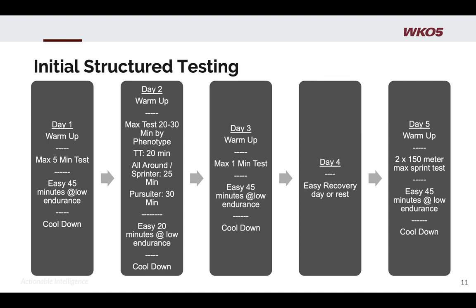Day one is a warm-up — each athlete needs to get warmed up at their own level — then an all-out maximum five-minute test, then roll around easy for 30 to 45 minutes to shake it off and cool down. Day two is your warm-up, then a max 20 to 30 minute test based on your phenotype. TT-ers need a 20-minute test; all-arounders and sprinters around 25; and pursuiters around 30 minutes. The reason the duration varies is that we want to burn off the anaerobic capability so it's not over-reflected in the model when we're separating FRC and FTP. Then roll around easy for 20 minutes at low endurance and cool down.